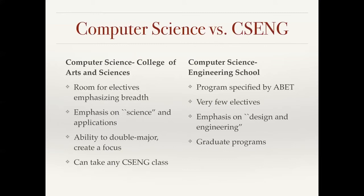So what's the difference between computer science and computer science and engineering? I think the two names really describe the difference. The computer science and engineering degree is a computer science degree within the engineering school. In our department, the computer science degree in the College of Arts and Science has room for electives, which emphasize breadth within the major. It's an emphasis on the science and applications. You have the ability to double major or create a focus. We have lots of students who double major in computer science and mathematics, computer science and economics, or computer science and business. These are all possibilities within our major because we have much more flexibility. If you don't declare as a CS major until later in your career at Santa Clara University, you can still finish within four years in our department because we don't have so many extra requirements specified by the engineering program.